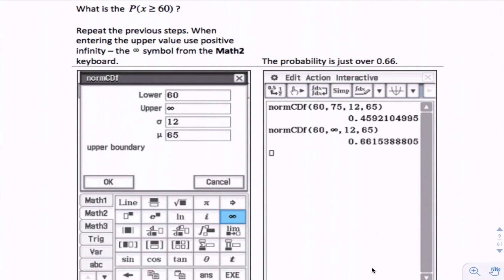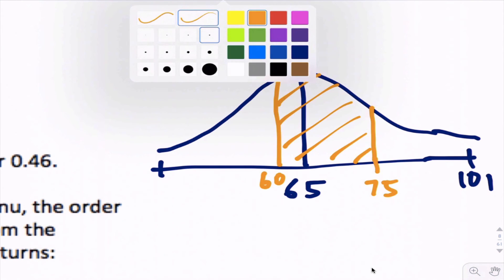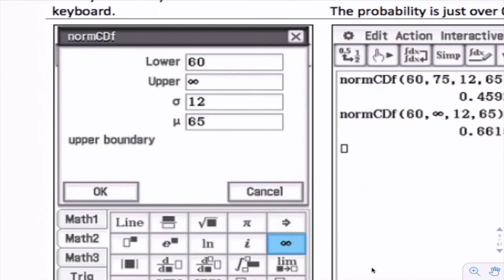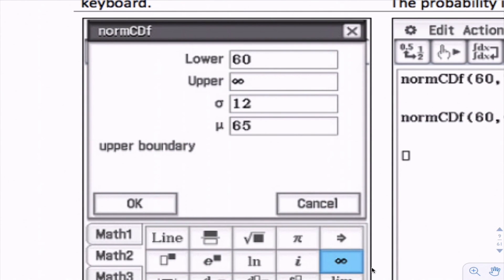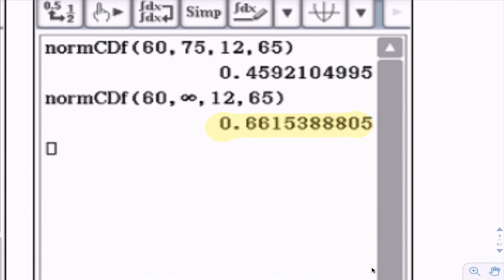If we wanted to work out the chance of being 60 and above, I can see that that probability, 60 and above, would be greater than 0.5, because this point here, the mean, half of the values are above, half are below. Because 60 is below the mean here, the probability of being greater than 60 would be greater than 0.5. This is what we type in our calculator: same series of keystrokes. The lower is 60, the upper infinity - we're going up from 60 to ever. Same 12 for the standard deviation, 65 for the mean. We should get 0.6615 or 0.662 for the answer.